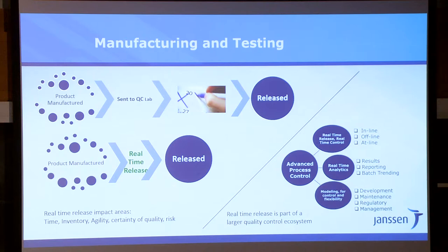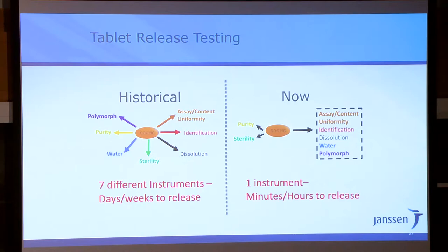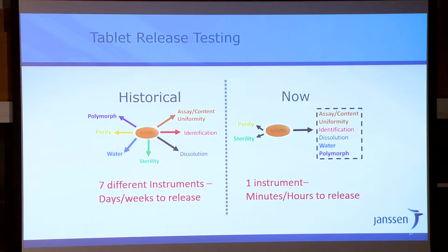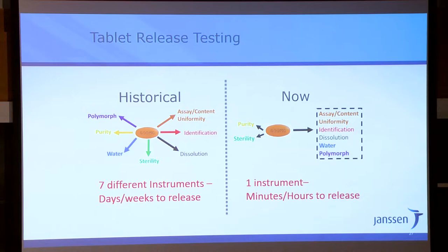Historically, when releasing tablets, we had basically seven tests and many days or weeks to get through all of it — things get backed up in the lab. Nowadays, everything except purity and sterility is done on one instrument, usually in minutes, rather than all taken to a lab for the answer. It has other advantages too: traditionally these things are done by HPLC. HPLC equipment takes a huge footprint, and environmentally the amount of acetonitrile solvent used by these labs is spectacular — it's all sent out for disposal.